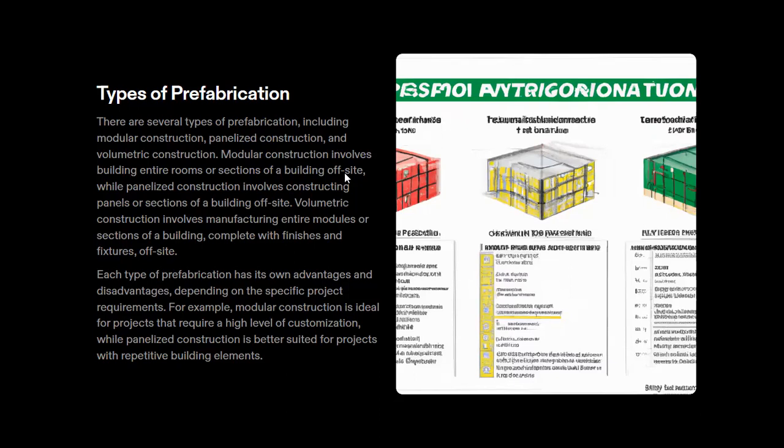Modular construction is ideal for projects that require a high level of customization, while panel construction is better suited for projects with repetitive building elements. Each type of prefabrication has its own advantages or disadvantages depending on the specific project requirements.